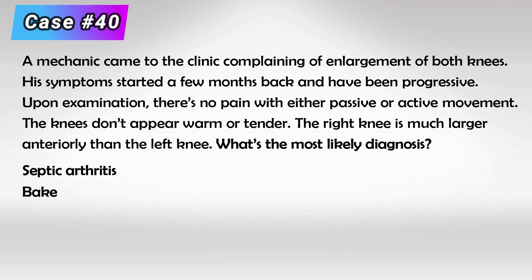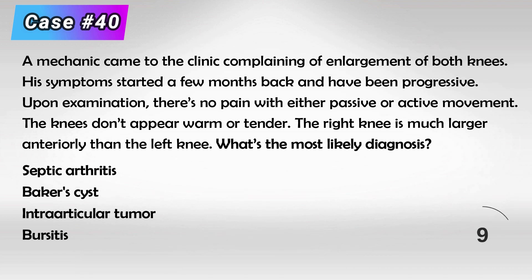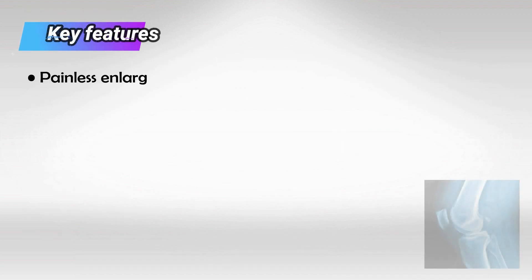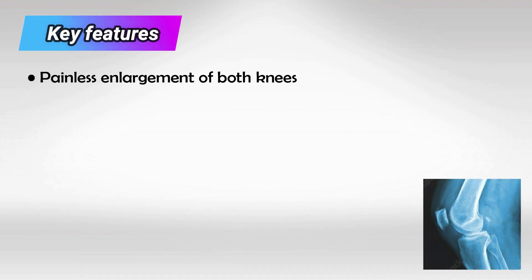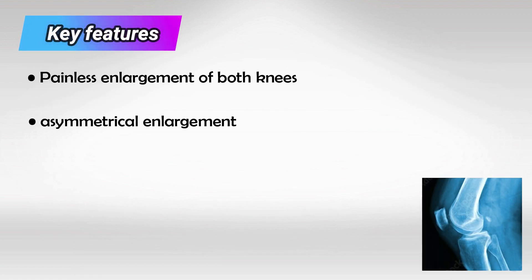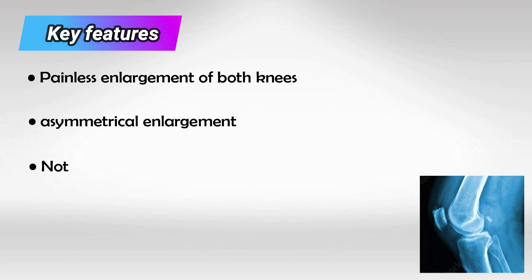The right knee appeared much larger anteriorly than the left knee. What is the most likely diagnosis? To summarize the key features: we have a mechanic with painless enlargement of both knees, which is asymmetrical, and there is no tenderness or warm sensation.